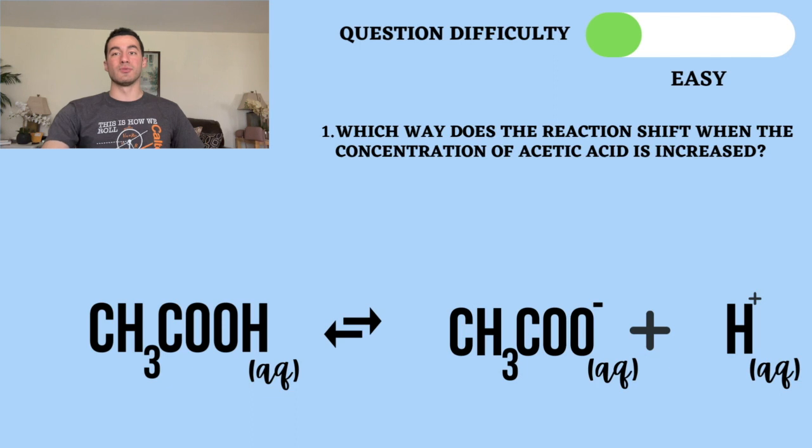So for question one, we're presented with the acid dissociation of acetic acid. And if you guys don't know what acetic acid is, think about vinegar, because acetic acid is found within vinegar. So we're presented with this question in which we have acetic acid dissociating into its ionic form and its conjugate base. So which way does the reaction shift when the concentration of acetic acid is increased?